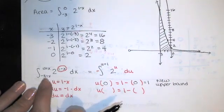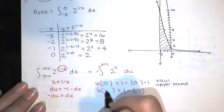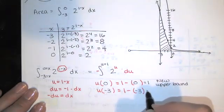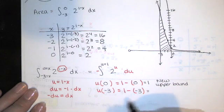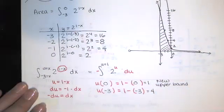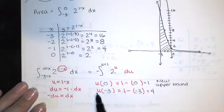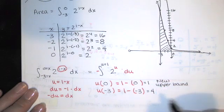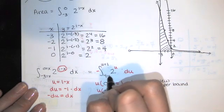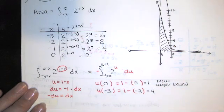And then if I substitute in x=-3 here and simplify, 1-(-3) is 4. Since -3 was my lower bound, this is my new lower bound. So u starts at 4 and goes to 1.